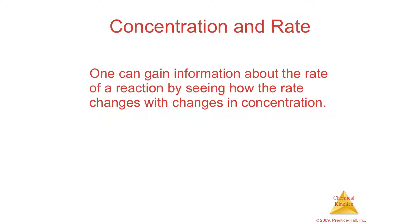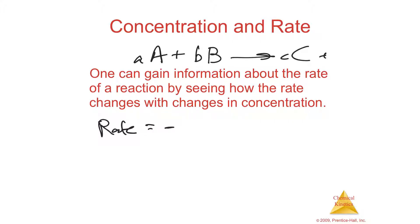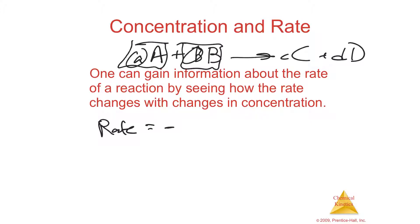Section 14.3, Concentration and Rate. From last time, the rate at which a reaction occurs is equal to the negative of the reactants. If you have A plus B yields C plus D, where A and B are the coefficients, the reactants are going away, so those rates are negative: 1 over the coefficient of A times the change in concentration of A divided by change in time, and the same for B.